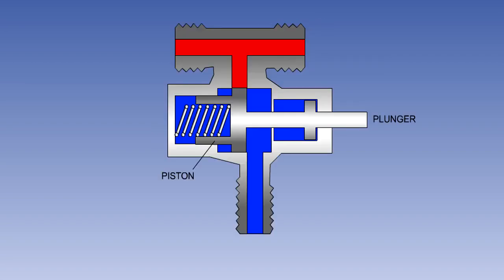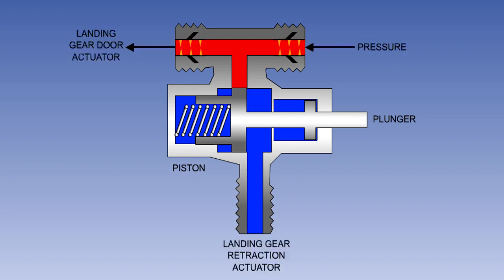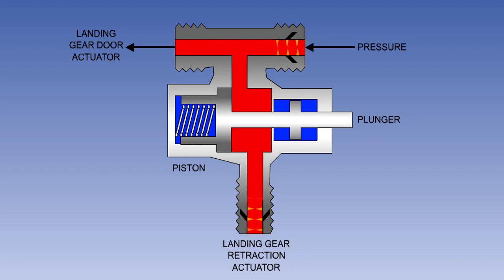The mechanical type of valve consists of a piston in a cylinder connected to a plunger, with a spring pushing the piston in the closed direction. If this valve is being used in a gear down sequence, then the fluid will first be ported to the door. Fluid to the gear will be blocked by the piston. When the door is fully open, a striker connected to the door will push the plunger across, allowing fluid to flow to the gear actuator.